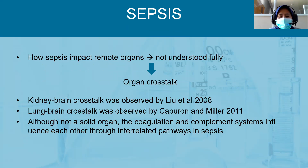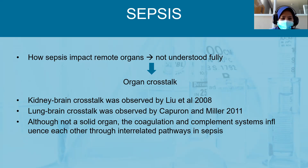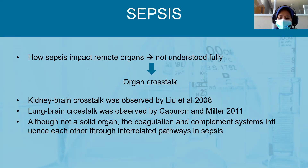How sepsis impacts remote organs is still not completely understood, but it is said to be caused by organ crosstalk. Leo et al. in 2008 observed kidney-brain crosstalk, and Capiron and Miller in 2011 observed lung-brain crosstalk. Other observations involved the coagulation and complement systems.